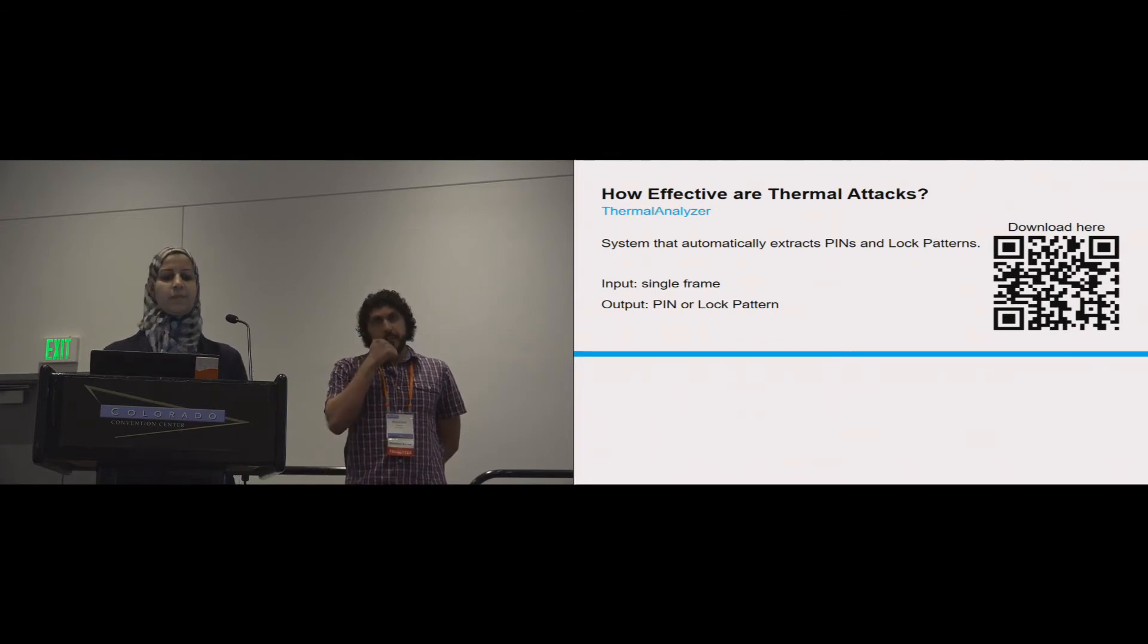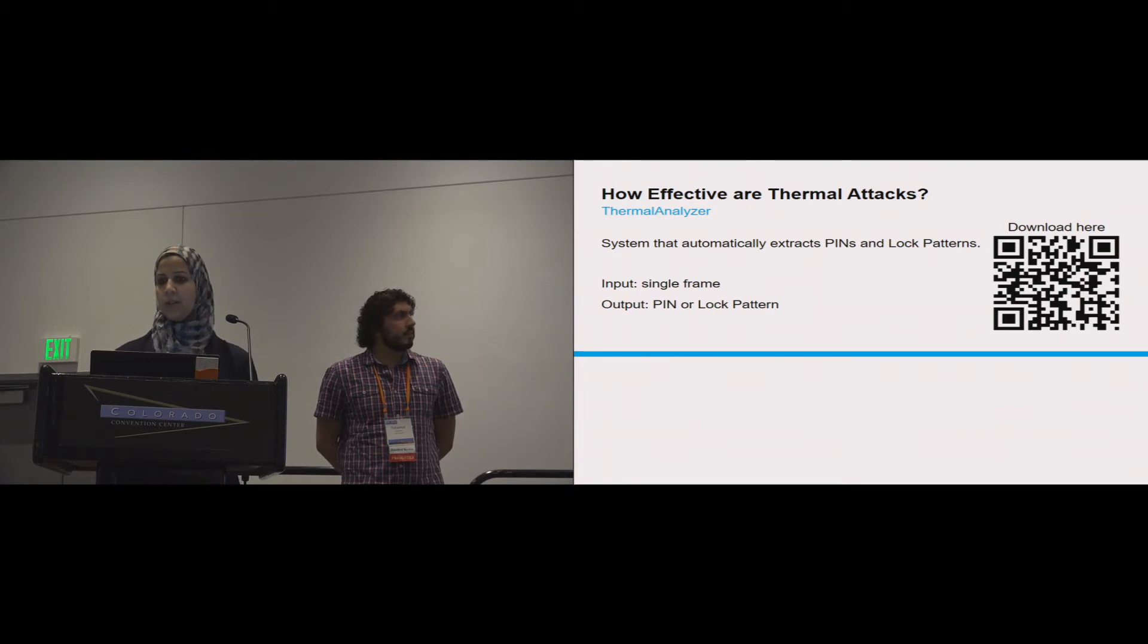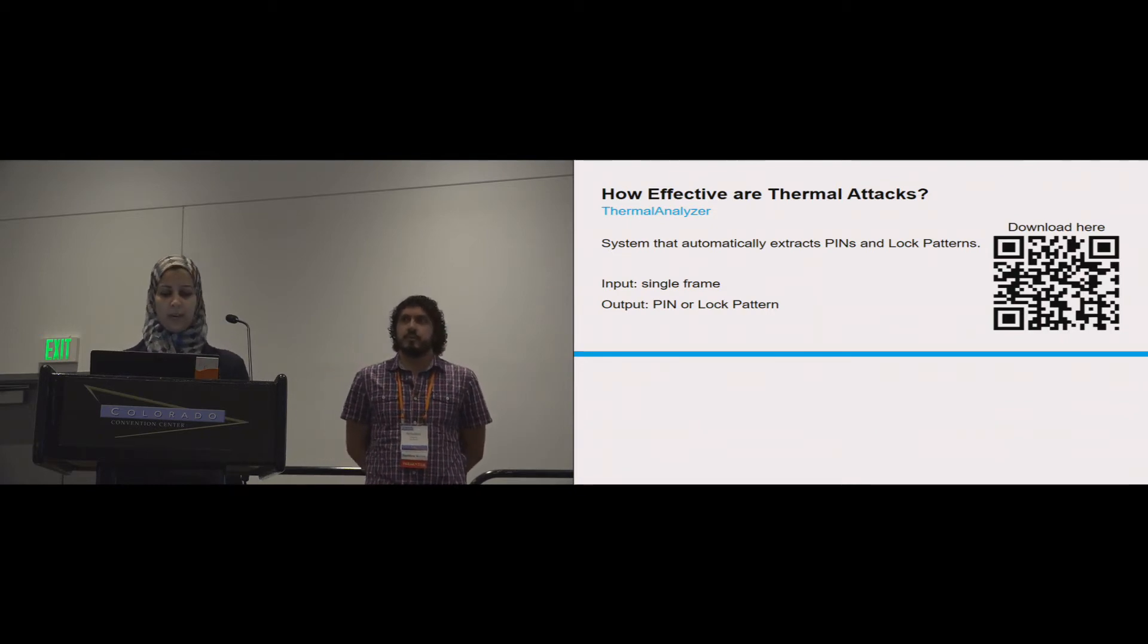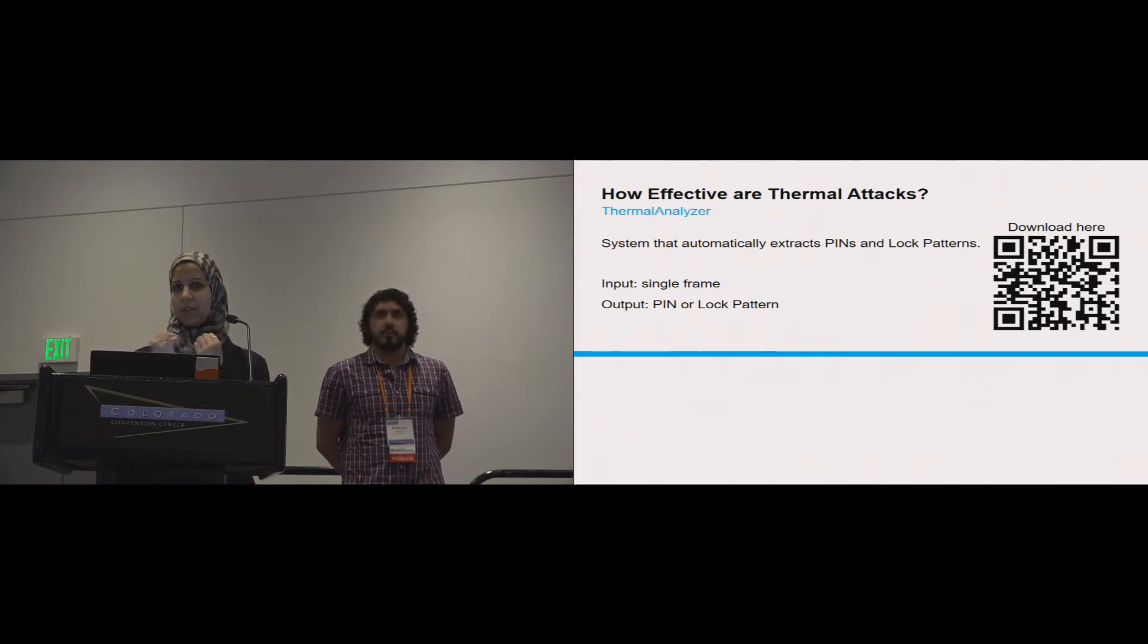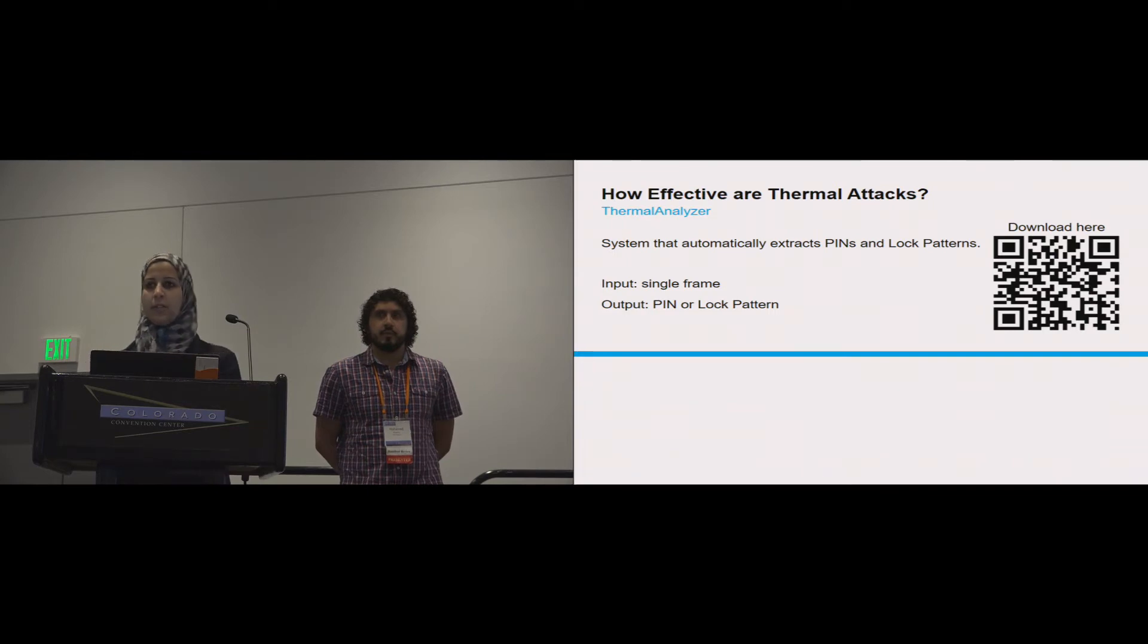What brings us to the main question is, okay, it's a significant attack, but how feasible is it and how effective and viable is it as an attack? In order to investigate this we built a system. Basically if you use our eyes you cannot really tell the slight difference in temperature, so you cannot really tell the order. What we did is we automated this process. We built a thermal analyzer which basically takes as input a single frame from the thermal camera and it can actually automatically get the PINs and the lock patterns.